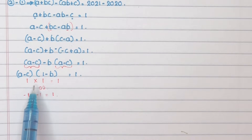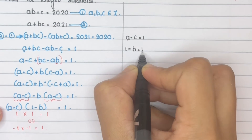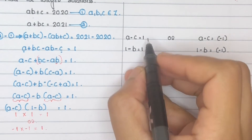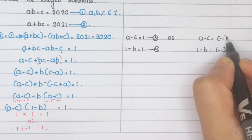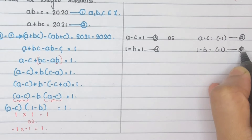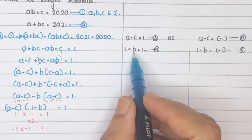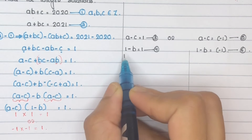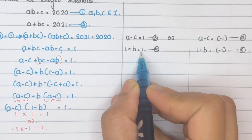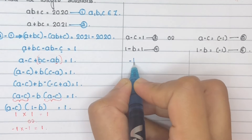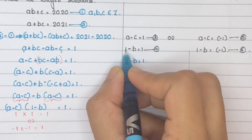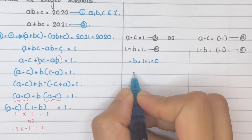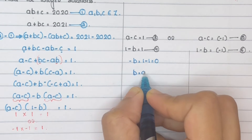So there are two conditions. Mark them as equations 3, 4, 5, and 6. For the first condition, consider equation 4: 1 minus B equals 1. So minus B equals 1 minus 1, which gives minus B equals 0, and therefore B equals 0.